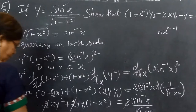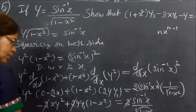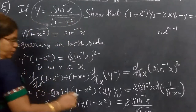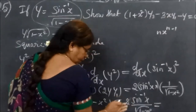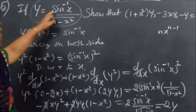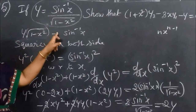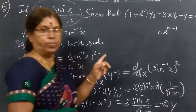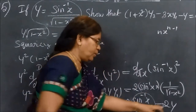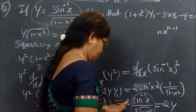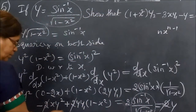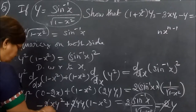This can be written as 2Y, because Y equals sin inverse X divided by root of 1 minus X. So in the expression, you can write sin inverse X as Y. The 2 cancels out.